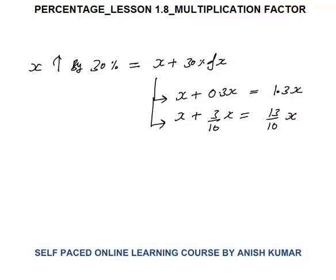Now what is the multiplication factor here? The initial number was x, the final number is 1.3x. Since 1.3 is getting multiplied with x, this is the multiplication factor. Same way, 13/10 is also the multiplication factor. These are two ways — you must know both, because sometimes the fraction form is easier and sometimes the decimal form is easier.